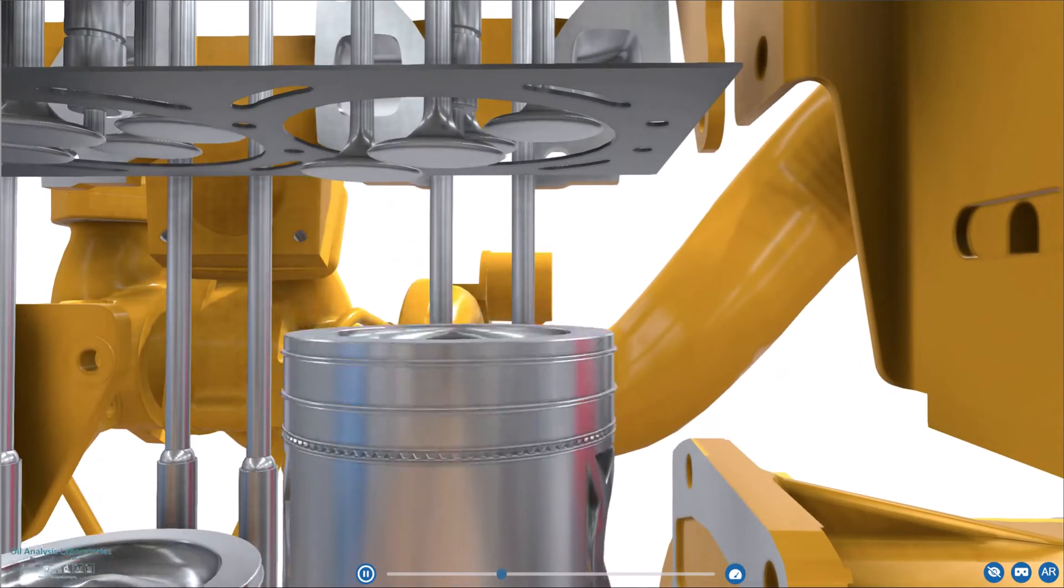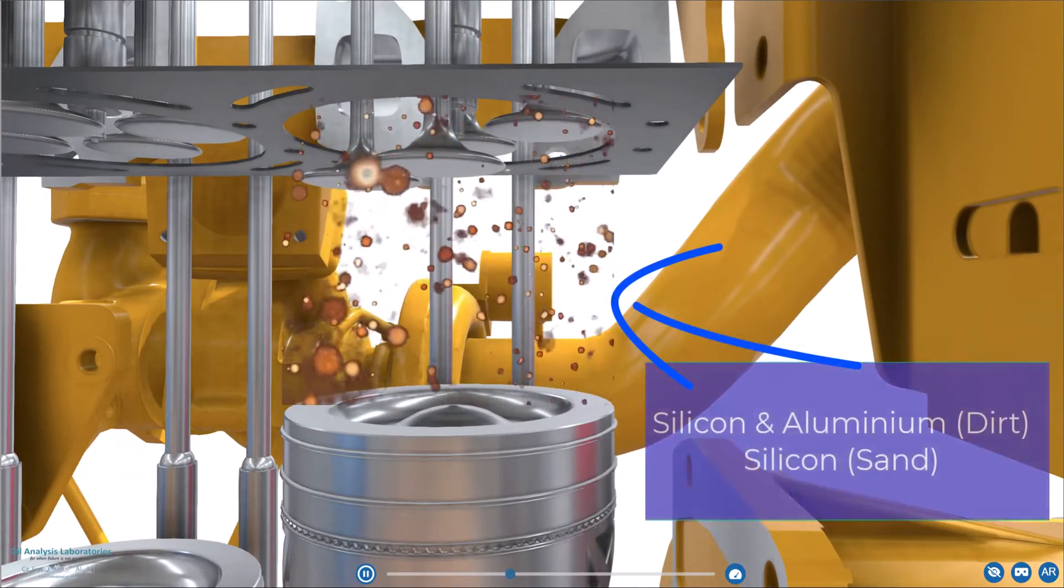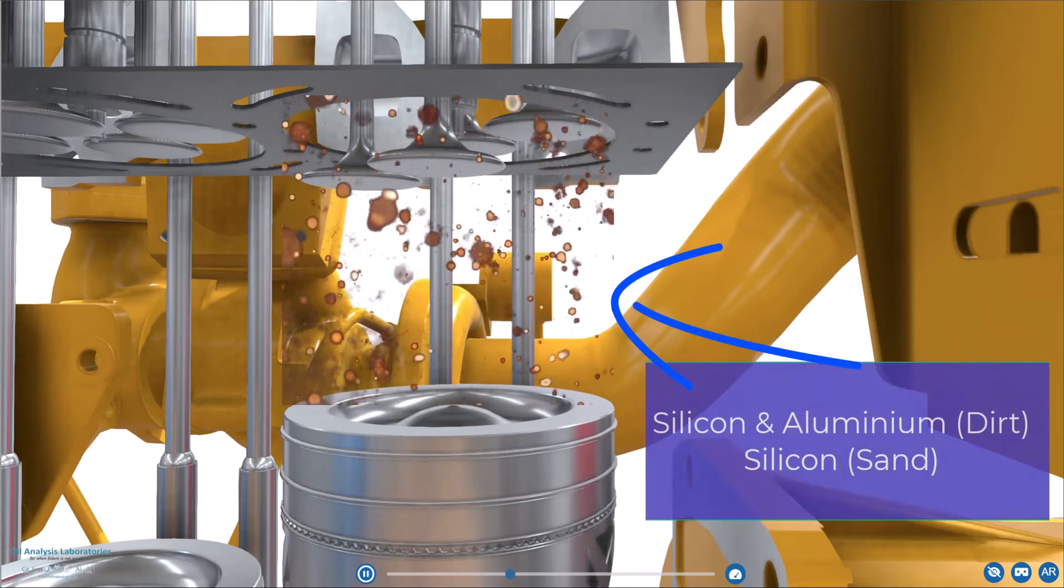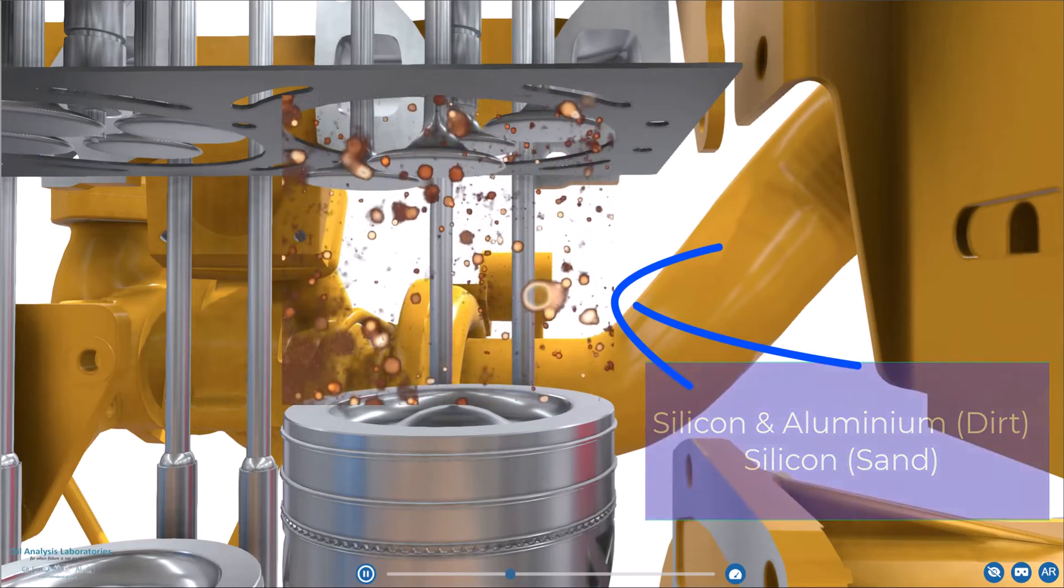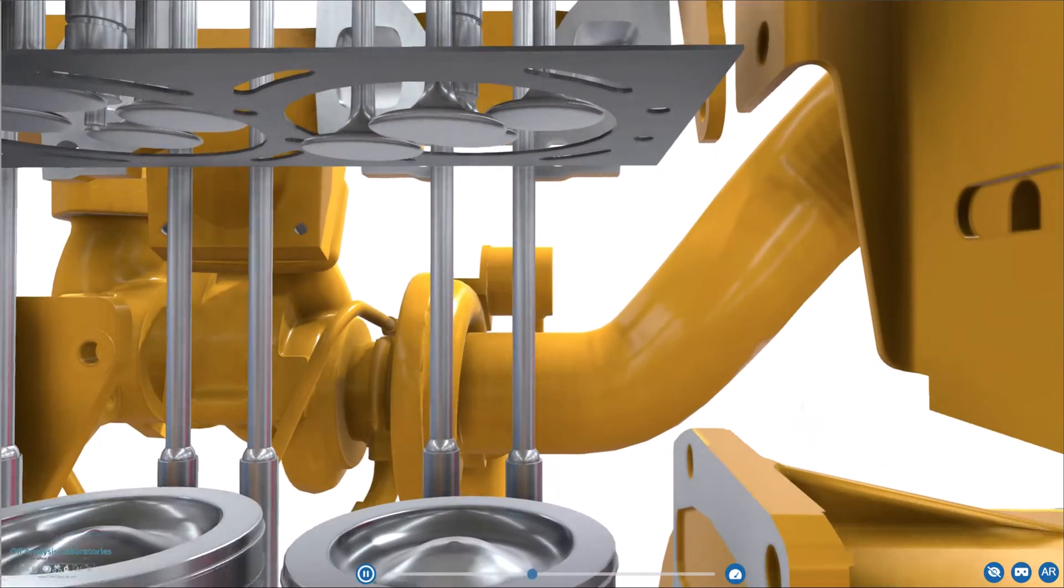Now it's not just coolant that can enter the upper cylinder, we have air which can contain dirt and dust particles. These are made of silicon and aluminium. We also have fuel and such here too but these are not metallic elements.